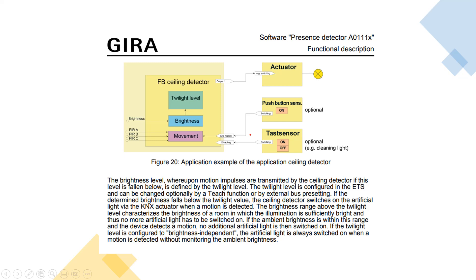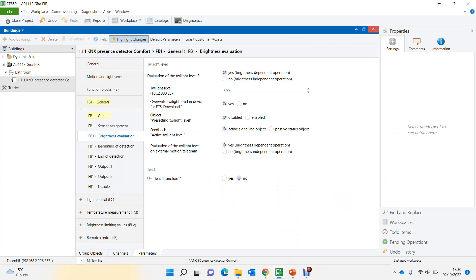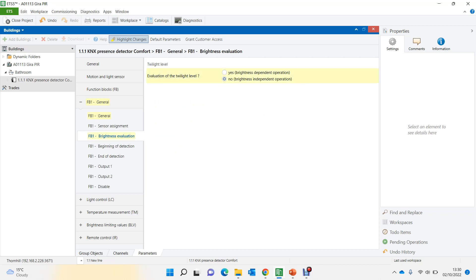The ceiling detector first checks brightness — whether there is enough light in the room. If there is enough light, movement detection is effectively disabled and no commands are sent. If there isn't enough light, it will send commands. When I disable the brightness option, the brightness function disappears and it becomes a pure movement detector — every time there is movement it will act on it. It no longer looks at the light level at all: movement turns the light on, end of movement turns it off.